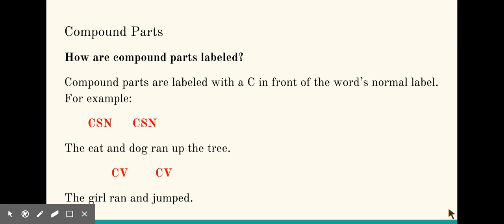How are compound parts labeled? Compound parts are labeled with a C in front of the word's normal label. For example: The cat and dog ran up the tree. We have two subjects in the sentence, so in front of each subject we would label it with a C for compound subject. We then also label and with a C.